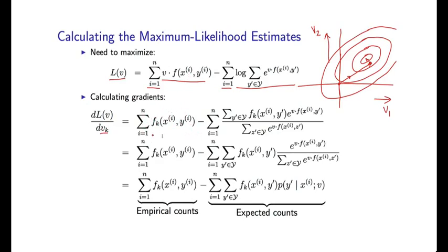So if I differentiate this term, I simply get sum equals 1 to N of FK. Okay, so this is very easy to calculate, this first term. I simply sum over all the training examples, calculating the value of the K feature, and that gives me the first component of this derivative, the derivative with respect to VK.